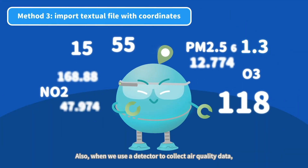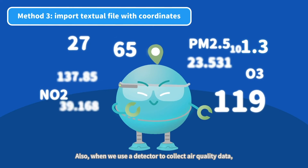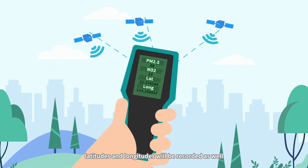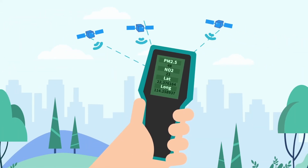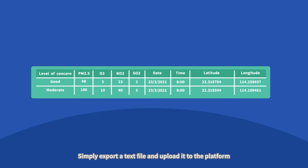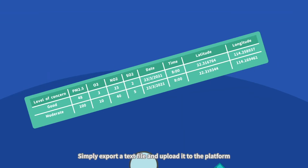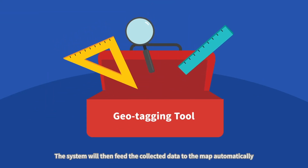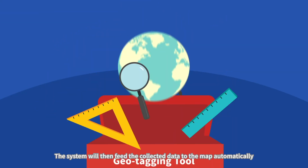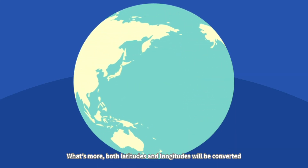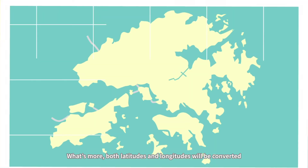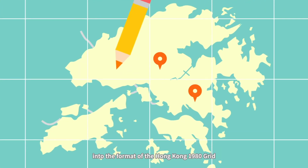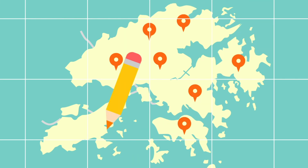Also, when we use a detector to collect air quality data, latitudes and longitudes will be recorded as well. Simply export a text file and upload it to the platform. The system will then feed the collected data to the map automatically. What's more, both latitudes and longitudes will be converted into the format of the Hong Kong 1980 grid.